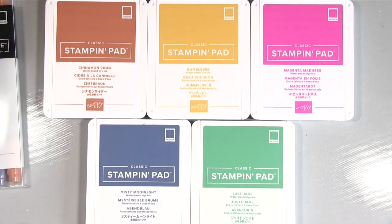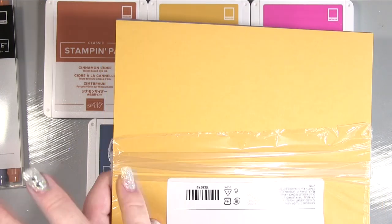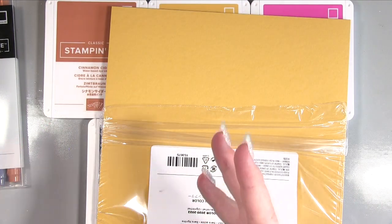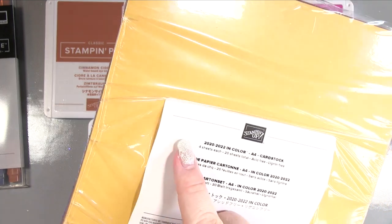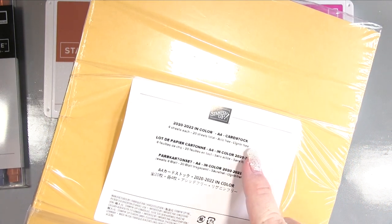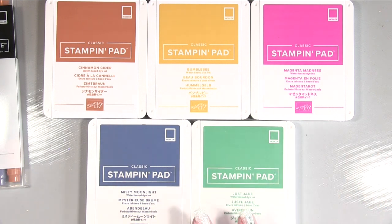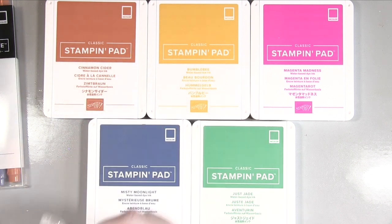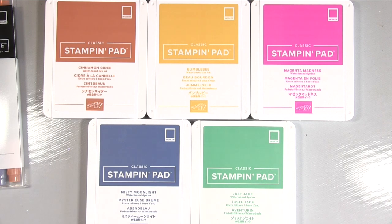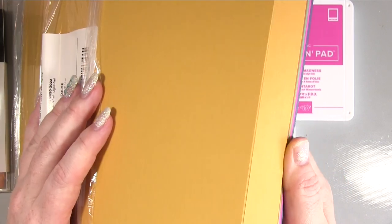Now this time I normally when the new colours come out I get a pack of card of each colour. You can get I think a pack of 20 sheets for each individual colour or you can get this mixed pack which is what they call the 2020-2022 in colour collection. Four sheets of each, 20 in total and because I wasn't 100% sure which colours I would like on this one, I wasn't particularly sure about this one with how it would look. So I got the mixed pack of card which is a really nice way of getting a bit of card of each.